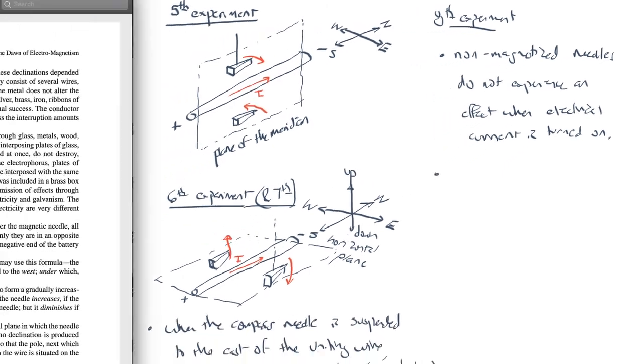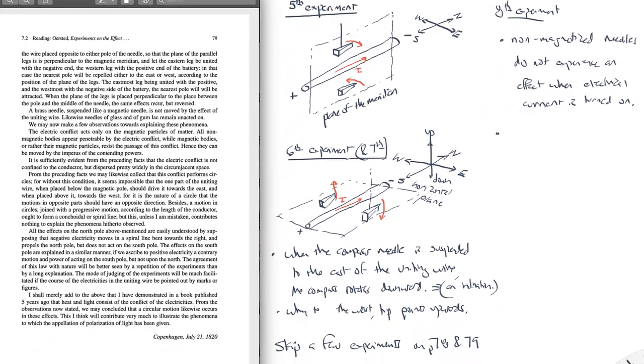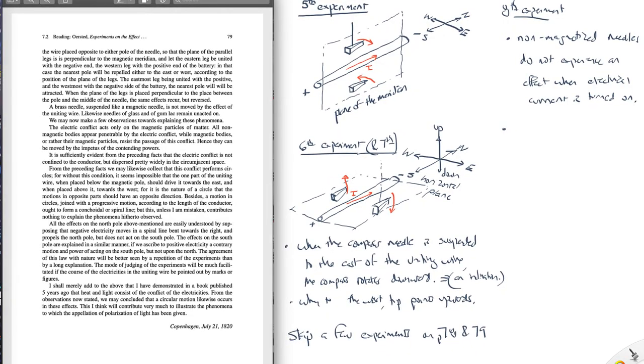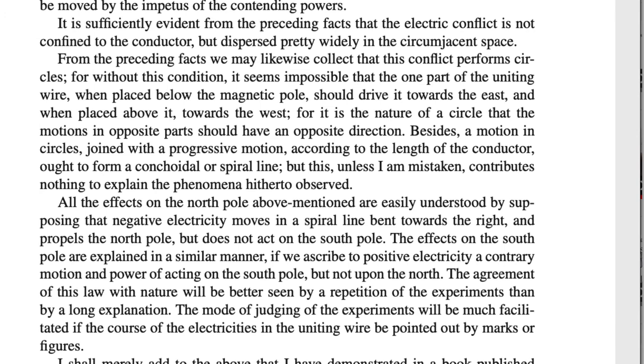So this has clearly something to do with the fact that we're dealing with a magnetic compass needle interacting with this electrical current flowing through the wire. So what happens then? Well, what Ørsted does is on page 79, he tries to offer an explanation of this in terms of what he calls, once again, this electric conflict. He says that there's some electric conflict that is not confined to the wire, but it is dispersed widely around the wire. There's sort of an environment, an invisible environment that's created around the wire that has an effect on this magnetic compass needle. He says it is sufficiently evident from the preceding facts. The electric conflict is not confined to the conductor, but dispersed pretty widely in the circumjacent space.